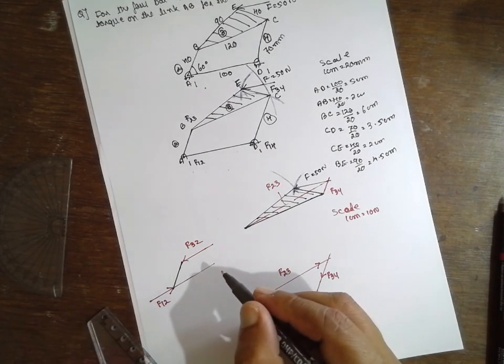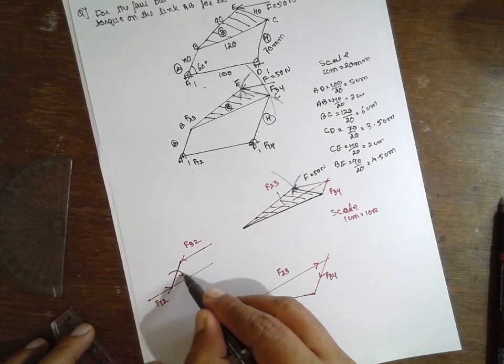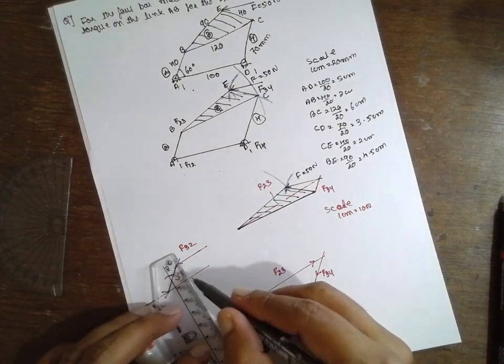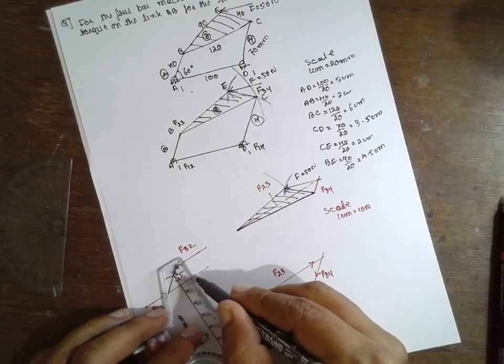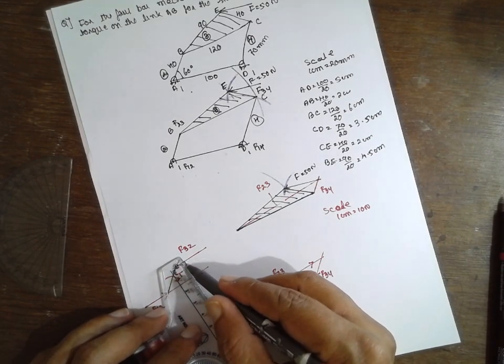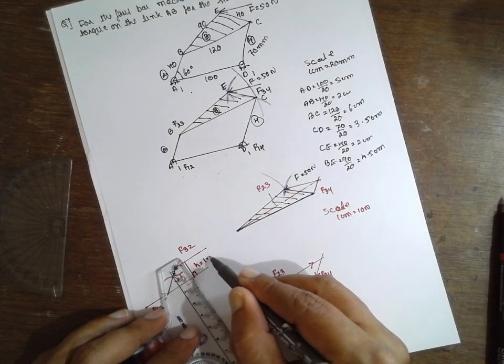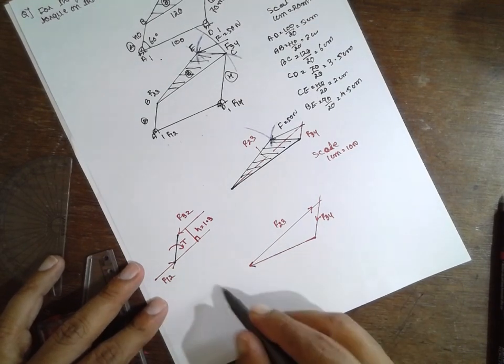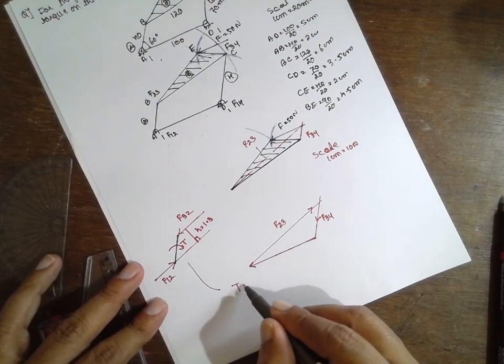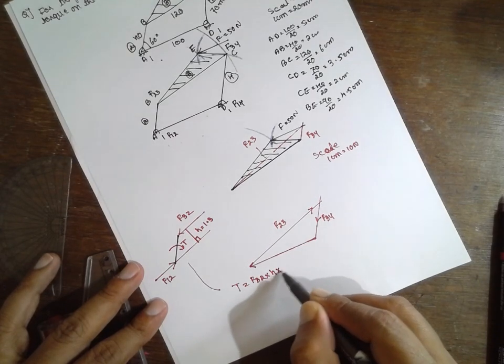And you have to find out, now, it is rotating in anti-clockwise. If torque is required in clockwise direction, how to measure the torque? Draw a perpendicular line from this part. H is nothing but 1.3. Now, how to find out the torque? The torque is nothing but T is equal to F32 into H into scale.